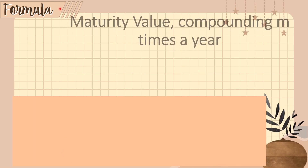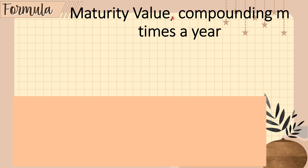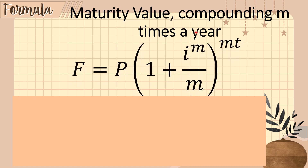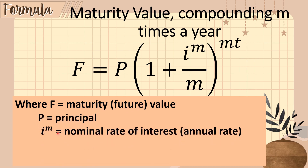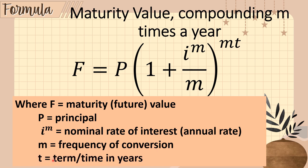Now let's have the formula for maturity value when compounding M times a year. The formula is: F equals P times the quantity (1 plus I sub M over M) raised to the power M times T. Where F is the maturity or future value, P is the principal, I sub M is the nominal rate, M is the frequency of conversion, and T is time or term in years.